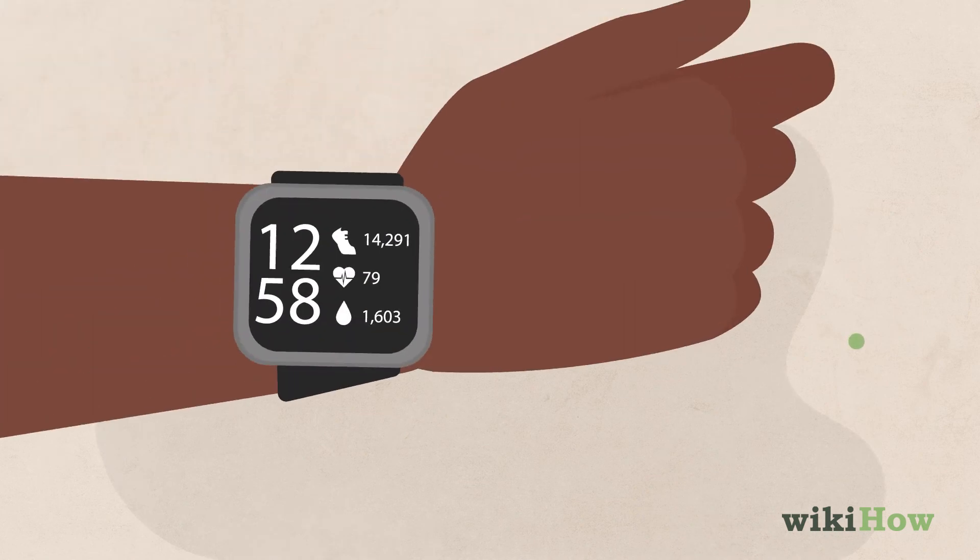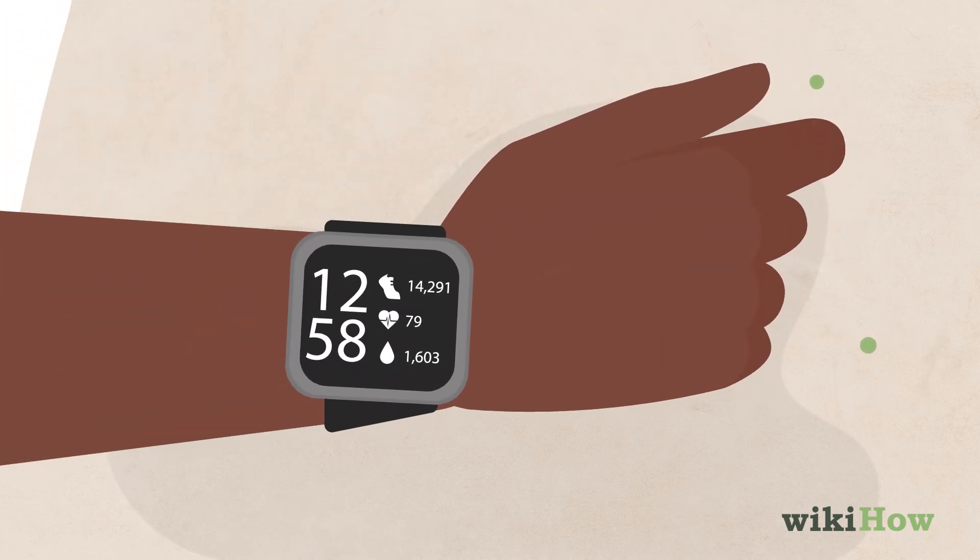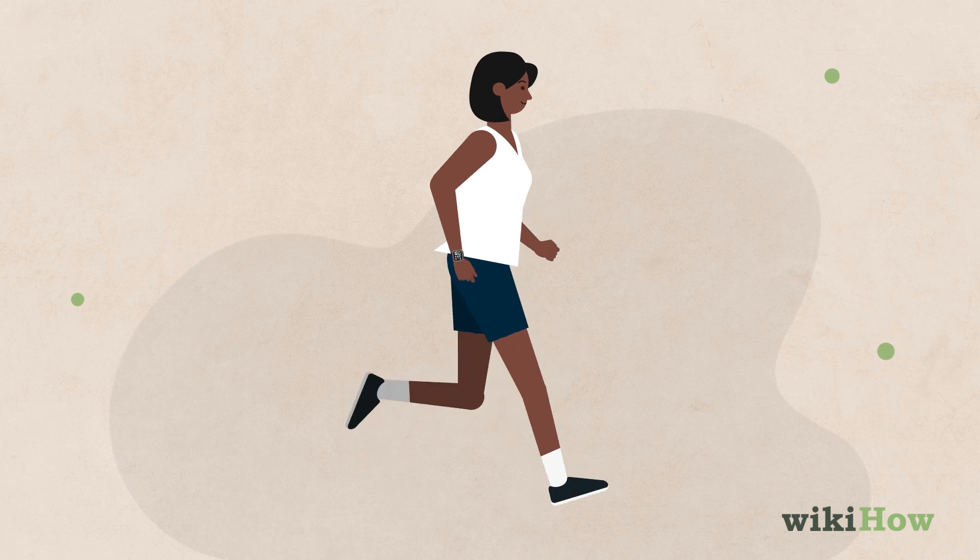There are also fitness trackers, like a Fitbit or athletic watch, that you can use to monitor your VO2 max while you work out.